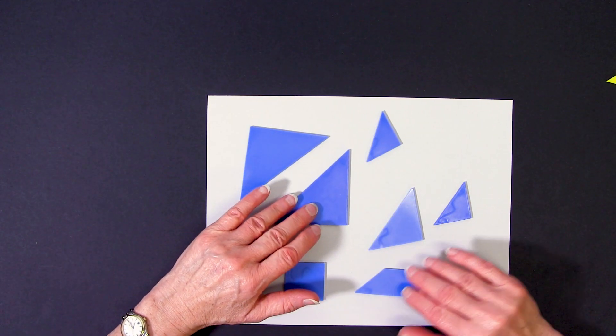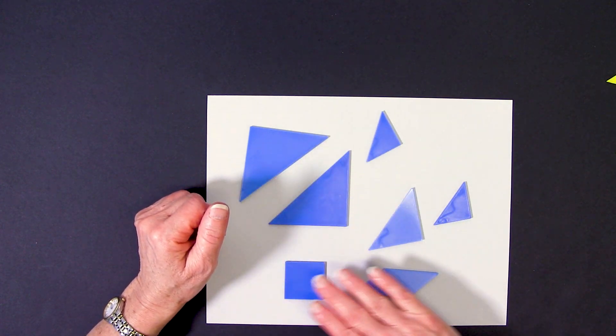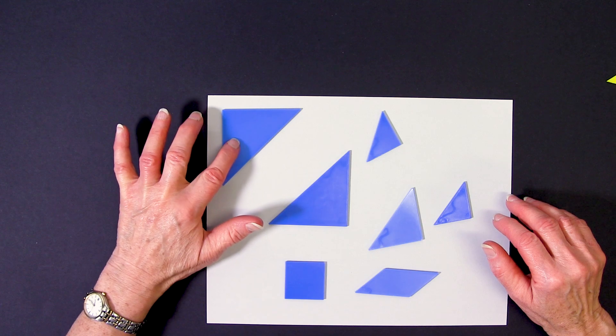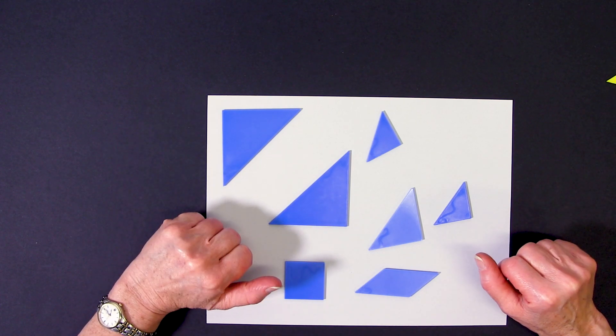These are tangrams. There are seven shapes in a complete set. Each individual shape is referred to as a tan.